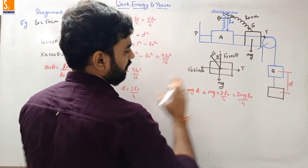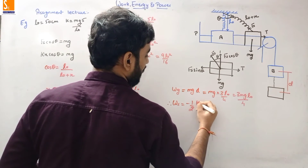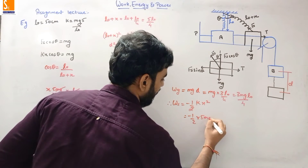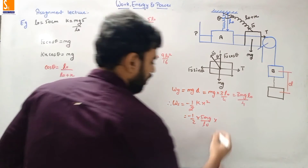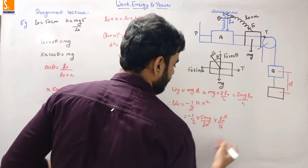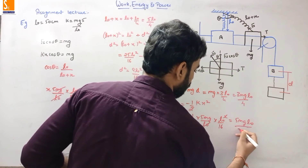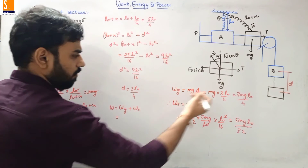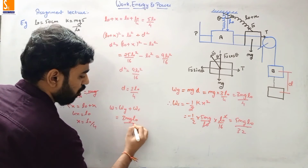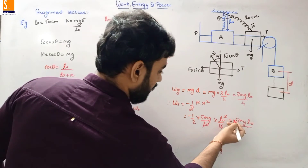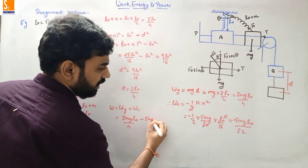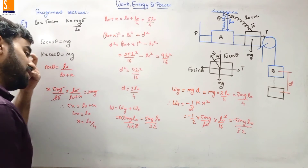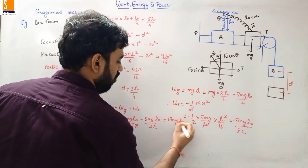Work done by gravity = 3MGL₀/4. Work done on the spring = −½kx² = −½ · (5mg/L₀) · (L₀/4)² = −½ · (5mg/L₀) · (L₀²/16) = −5MGL₀/32. Total work done = 3MGL₀/4 − 5MGL₀/32. Taking LCM of 32: (24MGL₀ − 5MGL₀)/32 = 19MGL₀/32.